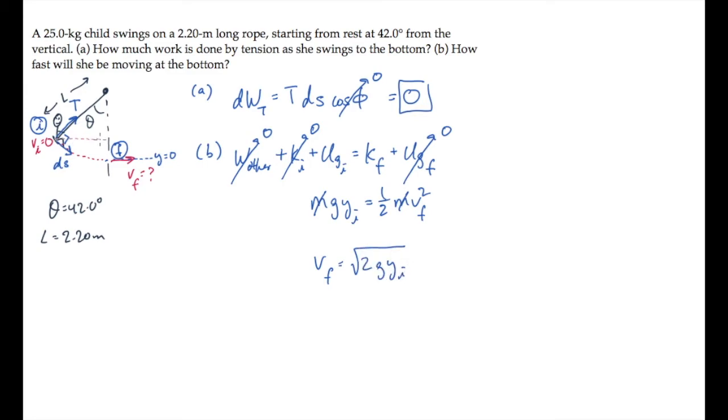That's this height, shown in light red above the reference. We can find its value by noticing that this orange line has a length of L, and this red line has a length of L cosine theta, and Y sub i is the difference between those, L minus L cos theta.